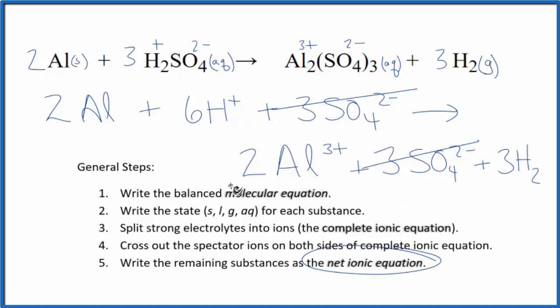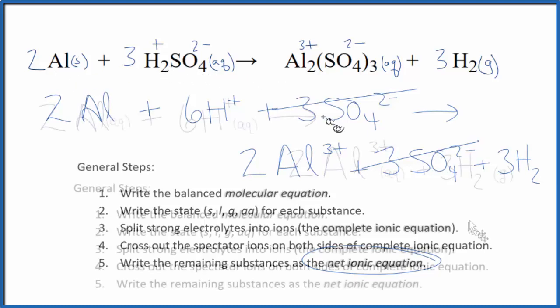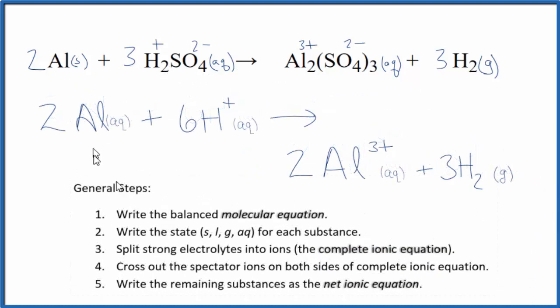Let me clean this up. I'll add the states in, and we'll have our net ionic equation for aluminum plus sulfuric acid. And this is the net ionic equation for aluminum plus sulfuric acid.